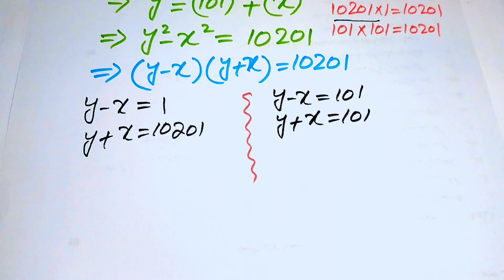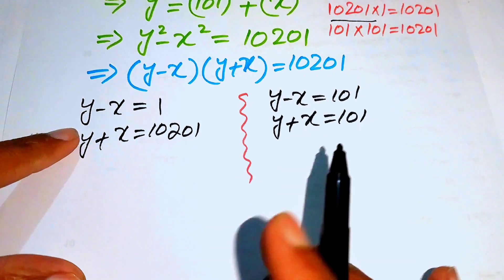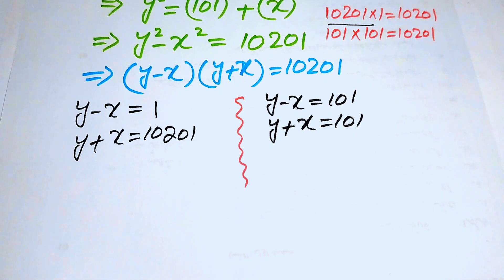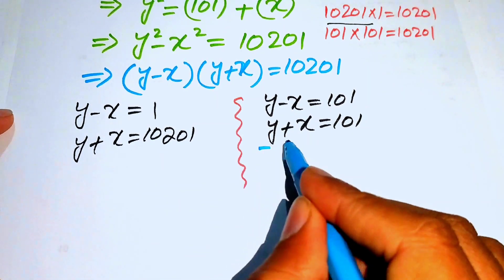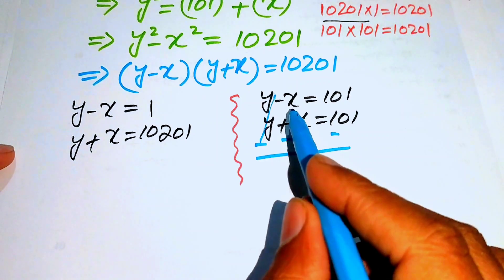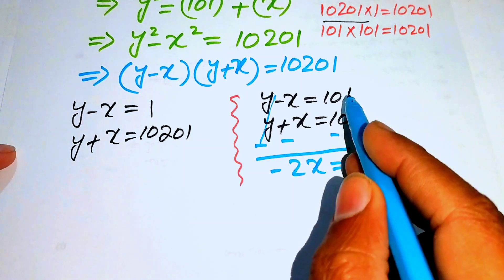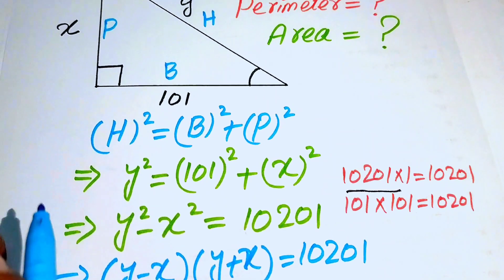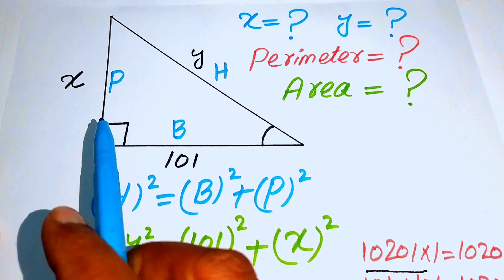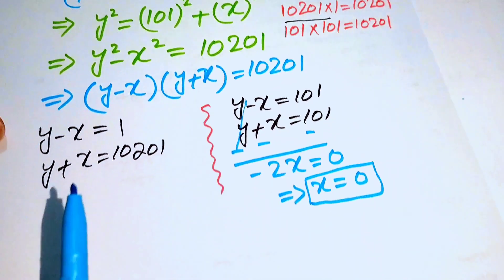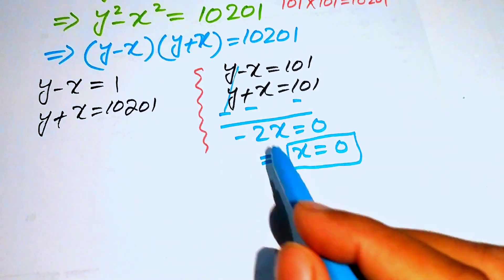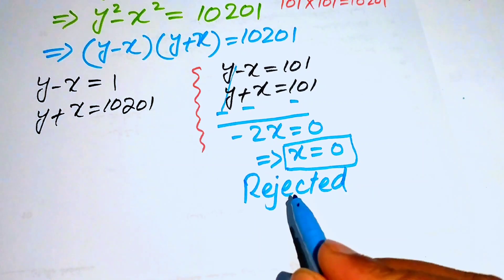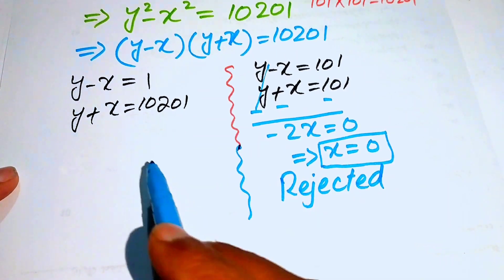In Case 2, subtracting the two equations cancels the y terms, giving −2x = 0, so x = 0. But x represents a side of the triangle and cannot be zero, so Case 2 is rejected. We proceed with Case 1 only.